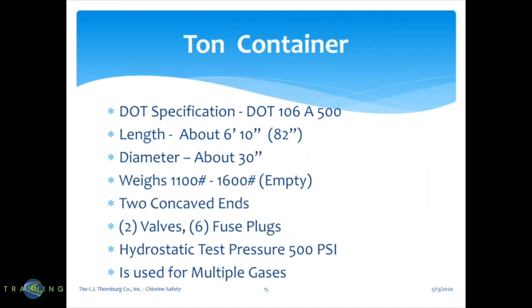The ton container has two concave ends, two valves, and six fuse plugs. The hydrostatic test pressure is 500 pounds per square inch. They are used for multiple gases, but in this case we're talking about chlorine. The 150-pound cylinder, the smaller of the two, has DOT specification DOT 3A480 or 3AA480. It is about 54.5 inches tall and 10.25 inches in diameter. It weighs between 80 and 126 pounds empty and has one valve with one built-in fuse plug.